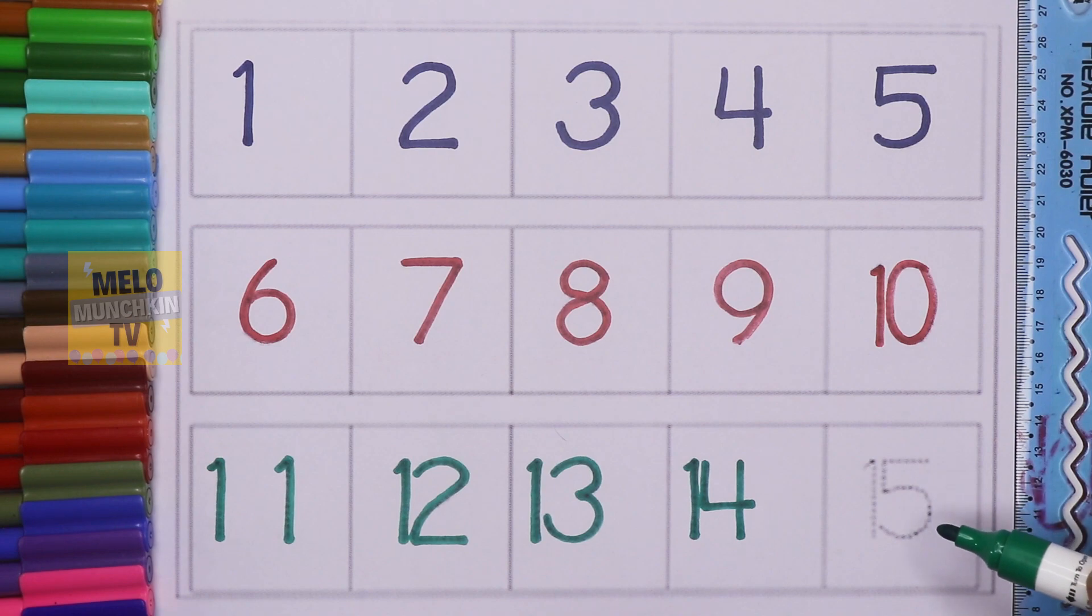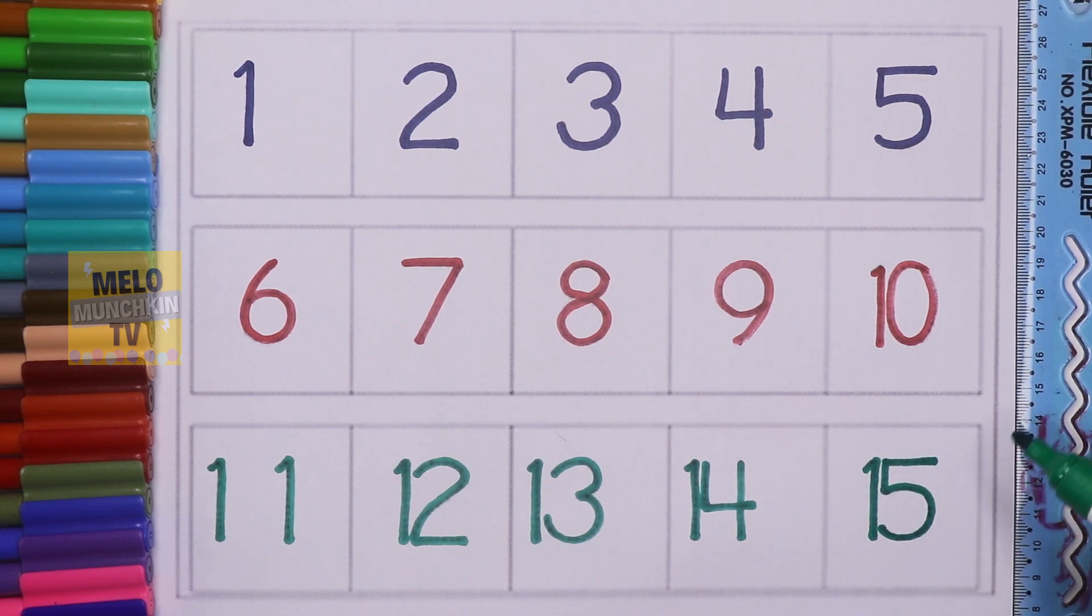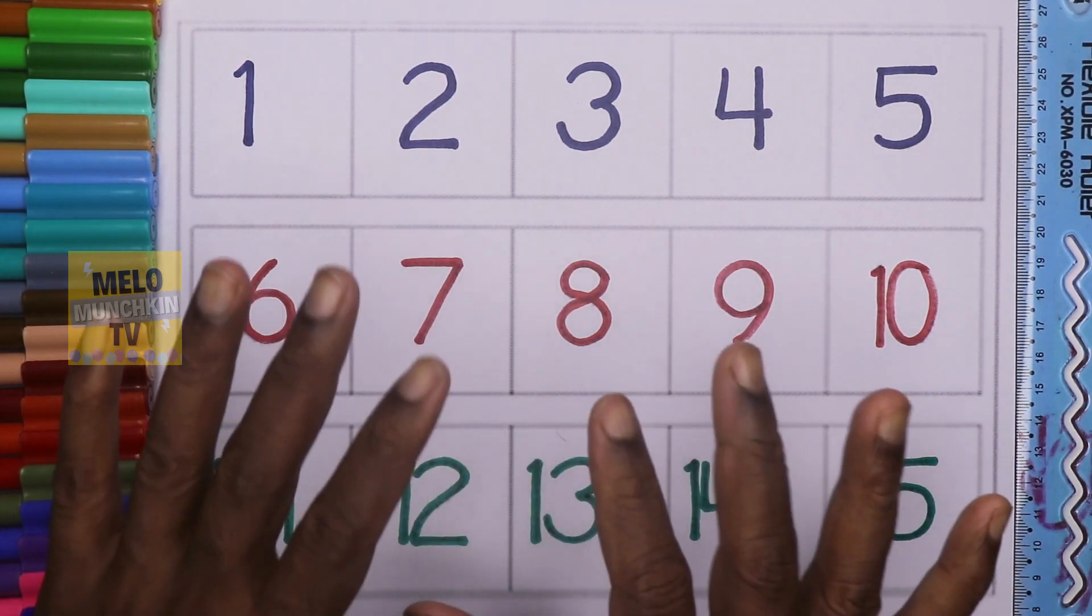This is 15, 1-5, 15, F-I-F-T double E-N, 15, F-I-F-T double E-N, 15. So hence we have completed our numbers from 1 to 15. Okay kids, take care and bye bye.